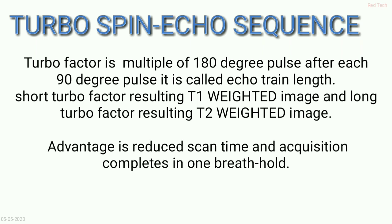If we acquire multiple echoes at a single TR, the main advantage is it reduces scan time and allows the sequence to be completed in one breath hold. This is the main difference between spin echo and turbo spin echo — TSE reduces scan time and can be performed in a single breath hold.